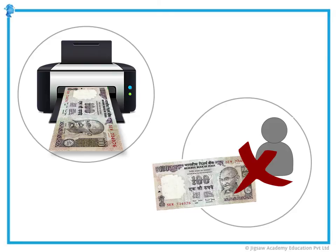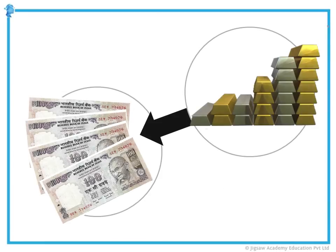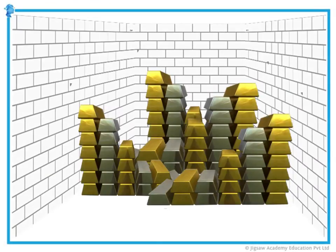You cannot randomly print money. If you and I print 100 rupee notes and tell somebody this is a 100 rupee note, they will not accept it. Why? Because there is no value to that money — it's just paper — until it is backed by an intrinsic value, which comes simply because the government has kept gold and silver in the treasury to back up the notes that it makes. The treasury is the place where physical precious metals are kept so that the government can create bank notes which can circulate in the economy.